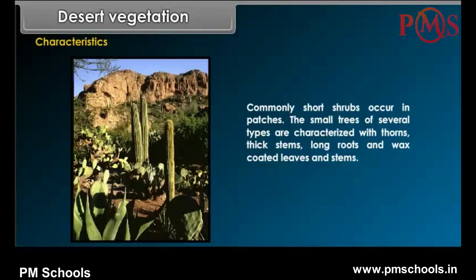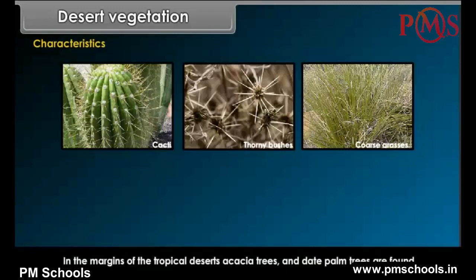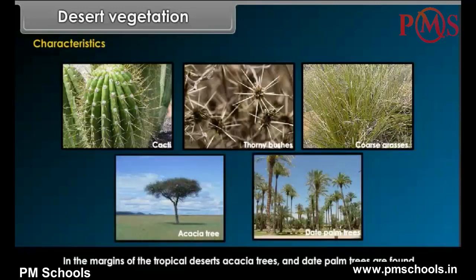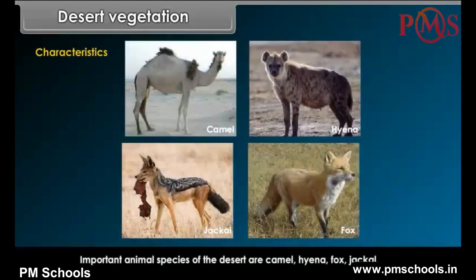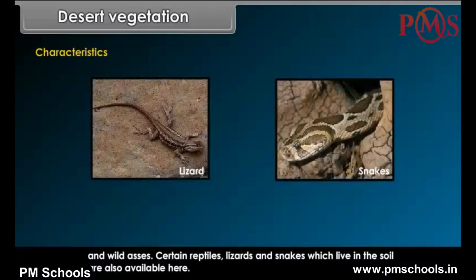Characteristics: Deserts in the tropical and subtropical regions have high temperature and least amount of rainfall. Commonly, short shrubs occur in patches. The small trees of several types are characterized with thorns, thick stems, long roots and wax-coated leaves and stems. The major plants found are cacti, thorny bushes and coarse grasses. In the margins of the tropical deserts, acacia trees and date palm trees are found. Important animal species of the desert are camel, hyena, fox, jackal and wild asses. Certain reptiles, lizards and snakes which live in the soil are also available here.